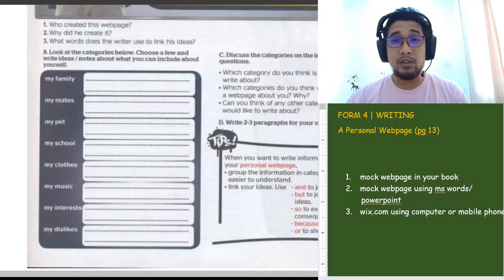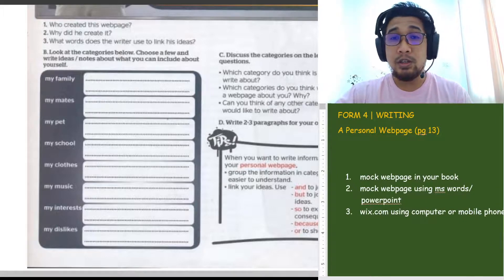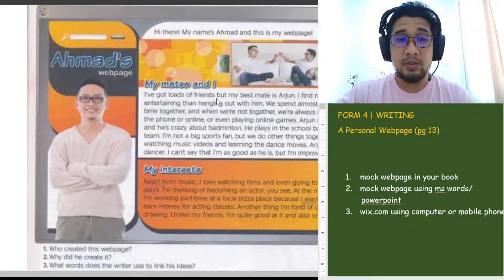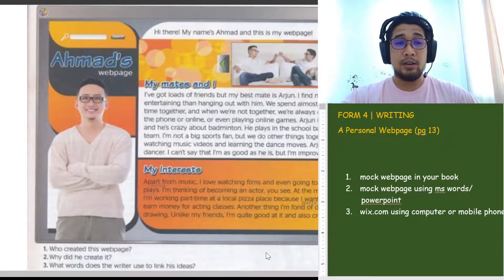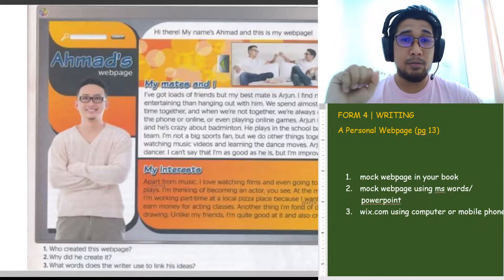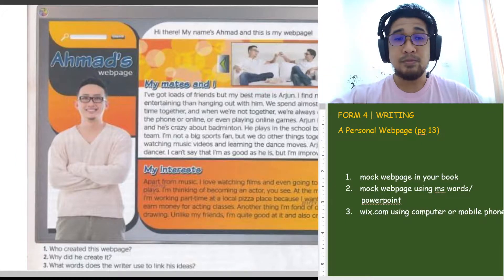Once you have made these notes, you can choose maybe three or four things that you would like to include in your webpage. I want you to write a webpage similar to this example. There are, for example, two paragraphs — about 'my mates and I' and 'my interests.' So maybe you can write three things: my mates and I, my interests, and maybe the last one is about my dislikes or my pets. Choose three things to put in your website.